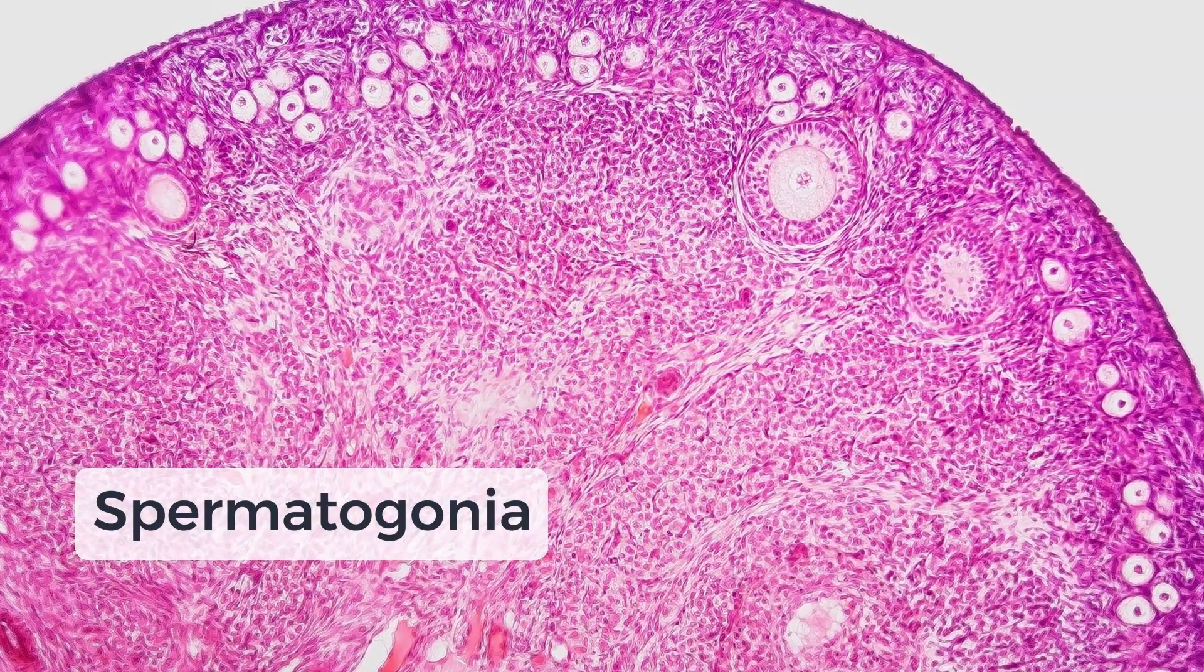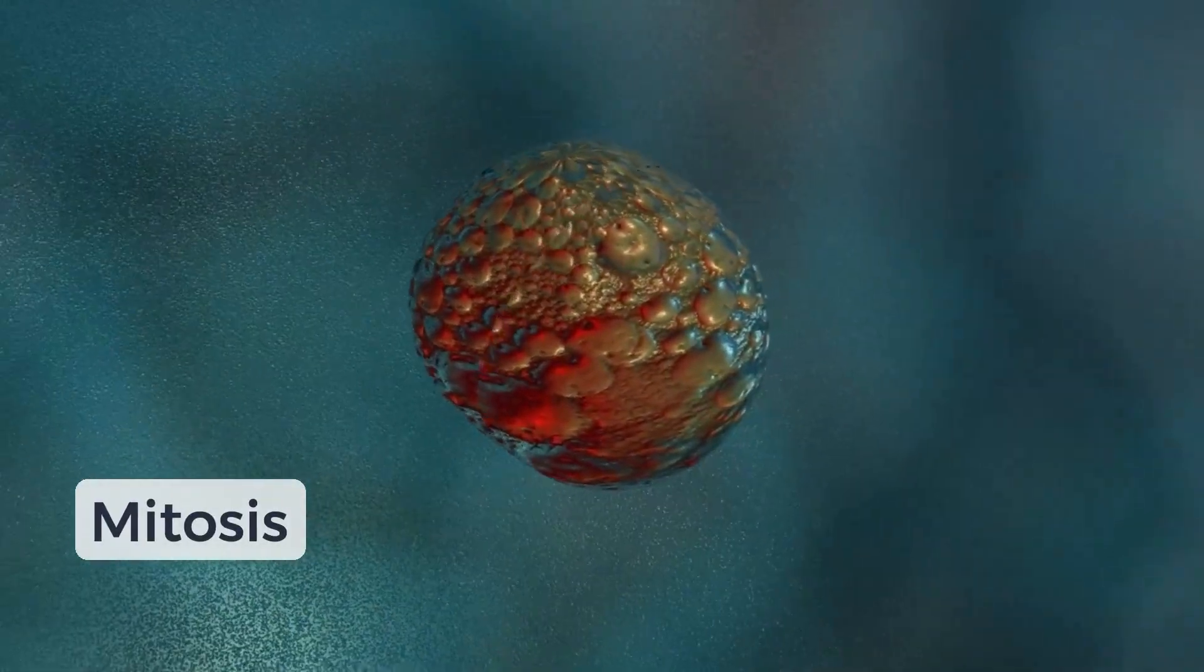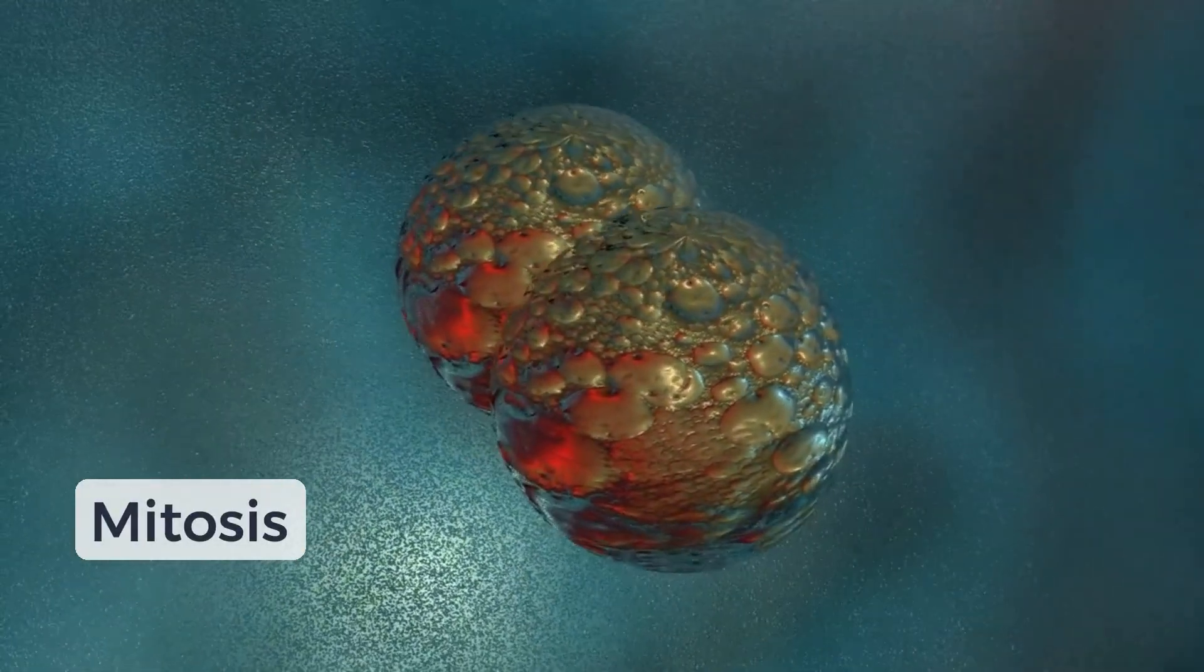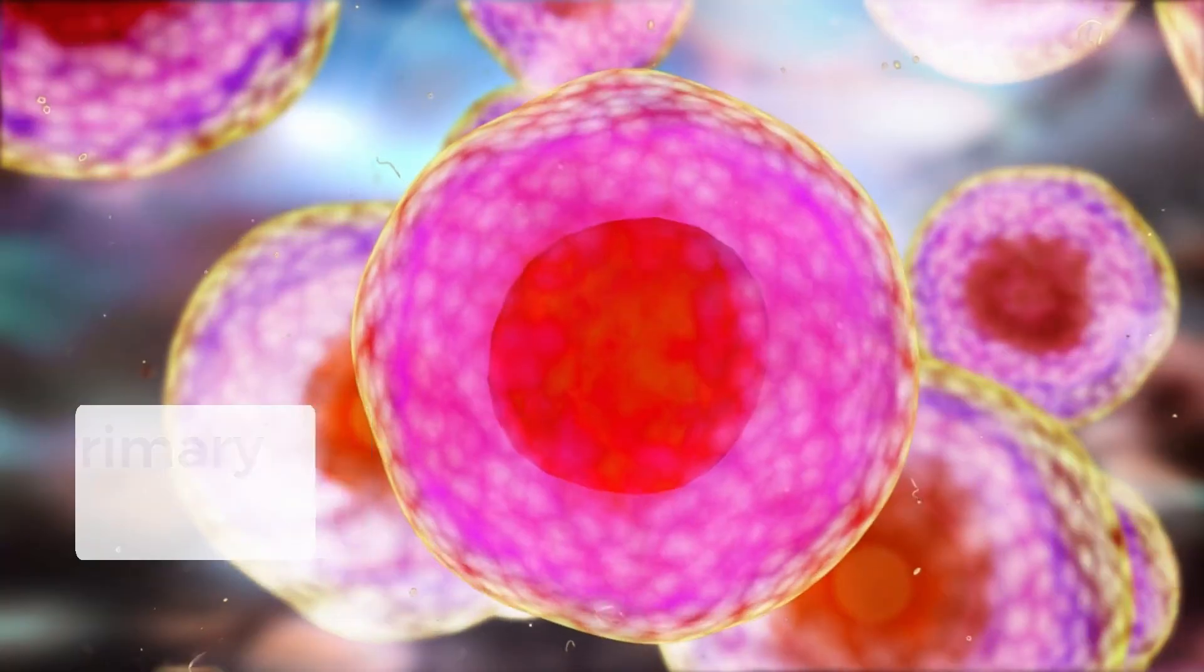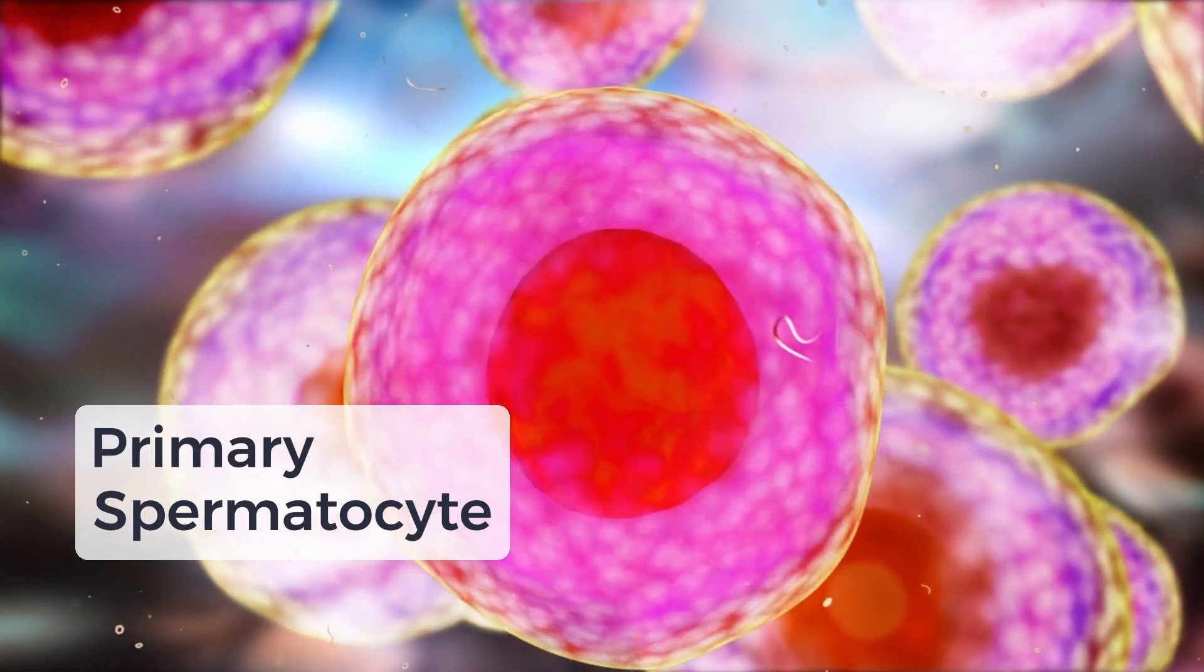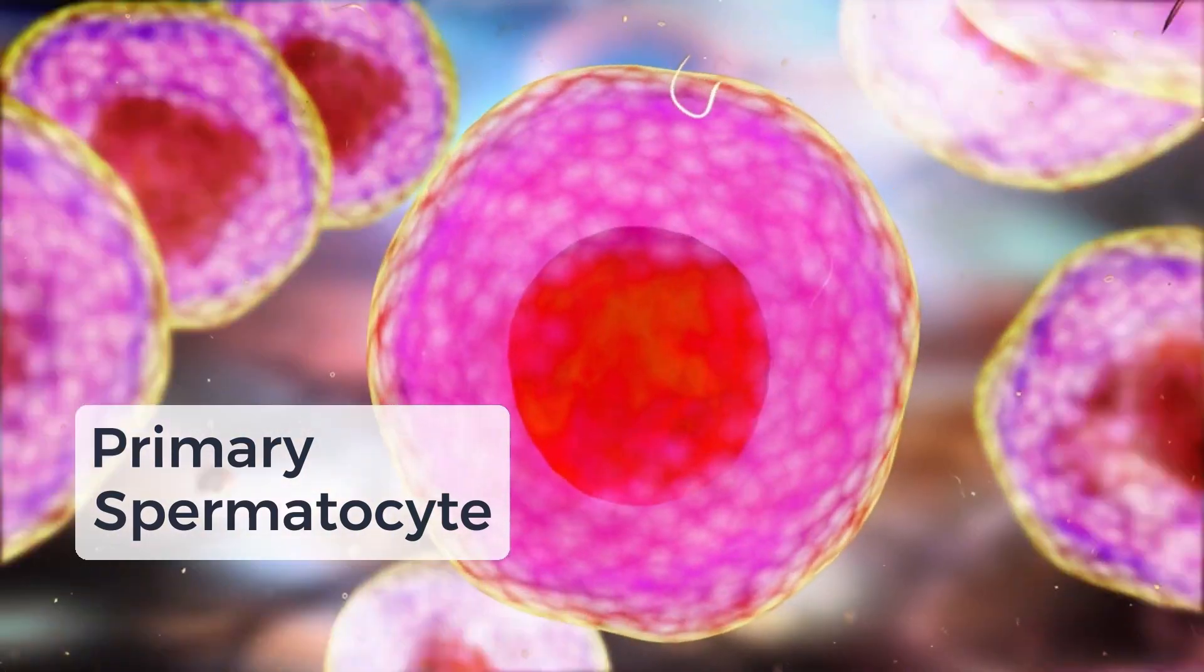This is the starting cell of the sperm. These cells divide by mitosis, which produces more cells. One stays behind and the other gets to the next phase. The one that moves on grows into a primary spermatocyte and gets ready to split again, this time in a new way.